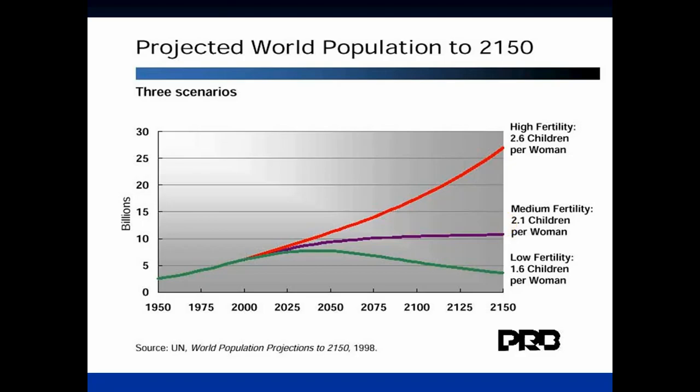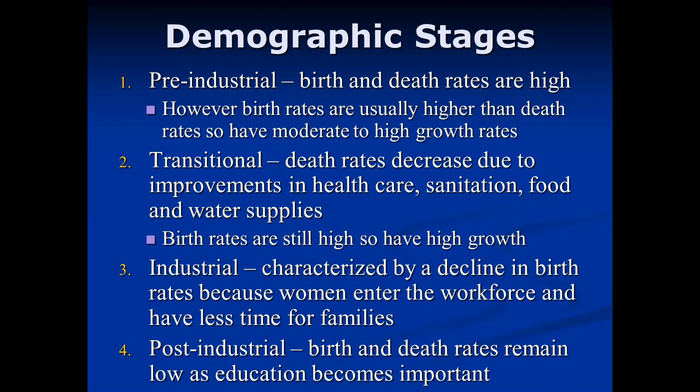A key concept is demographic stages — where a country is in relation to its industrial revolution. There are four major stages: pre-industrial, transitional, industrial, and post-industrial. These stages have a big impact on growth because they control birth and death rates, which are the two factors that drive population growth.